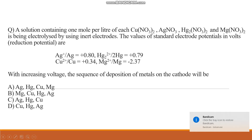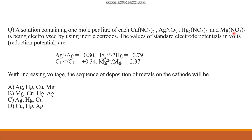In this video we are going to discuss a question from electrochemistry. A solution containing one mole per liter of each — copper nitrate, silver nitrate, mercury nitrate, and magnesium nitrate — is being electrolyzed using inert electrodes. The values of standard electrode potential in volts, that is reduction potentials, are given. With increasing voltage, the sequence of deposition of metals on the cathode needs to be found.